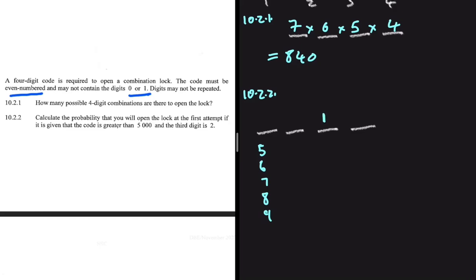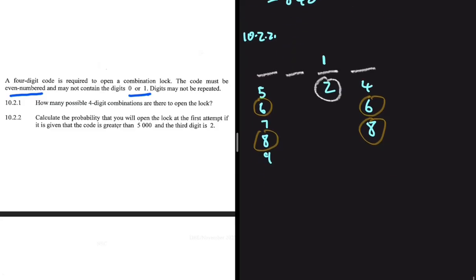For the combination to be even-numbered, the last spot must also be occupied by an even digit. However, since two is already on the third spot, we cannot use it again. So the remaining even digits for the last spot are four, six, and eight. But six and eight can occupy both the first and the last spot, which creates a conflict of interest. We need to split into two cases.